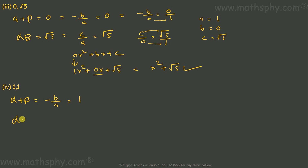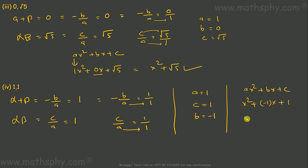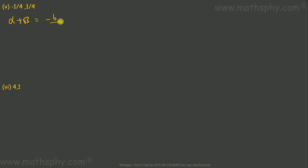Next: alpha plus beta equals 1, so negative b over a equals 1 over 1, and alpha times beta equals 1, so c over a equals 1 over 1. Taking a=1, c=1, and since negative b equals 1, b equals negative 1. The equation is x² minus x plus 1.